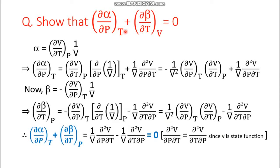The third and last question: show that del(alpha)/del(P)_T + del(beta)/del(T)_V = 0. The mathematical expression for alpha is (del V / del T)_P × (1/V). To differentiate alpha with respect to pressure at constant temperature, we split it into two parts: x = (del V / del T)_P and y = 1/V, then apply the product rule: d(xy) = x dy + y dx.